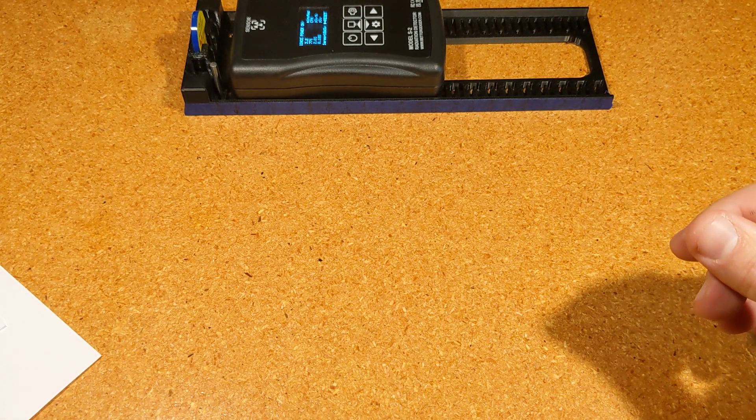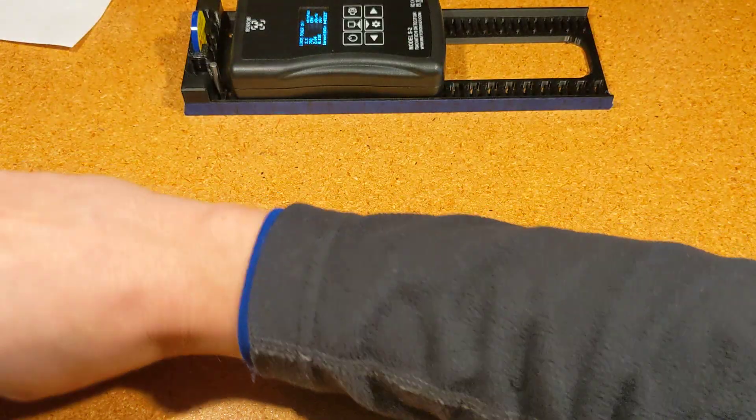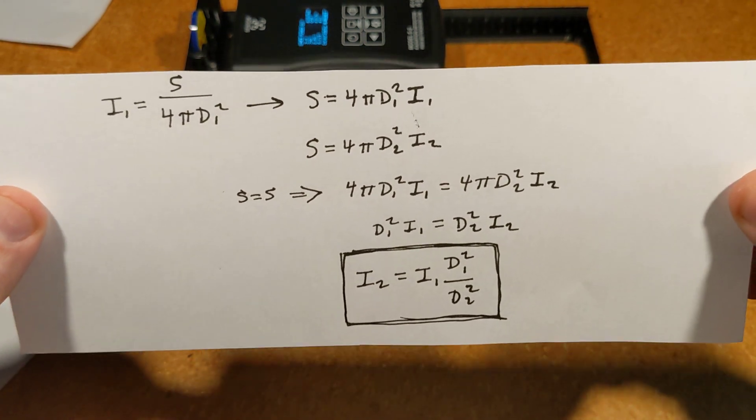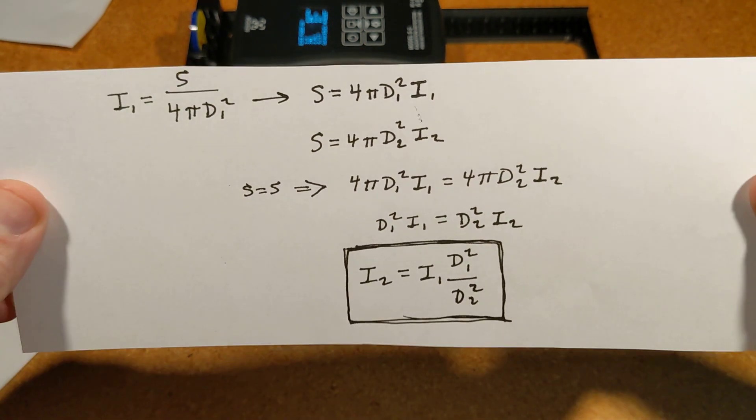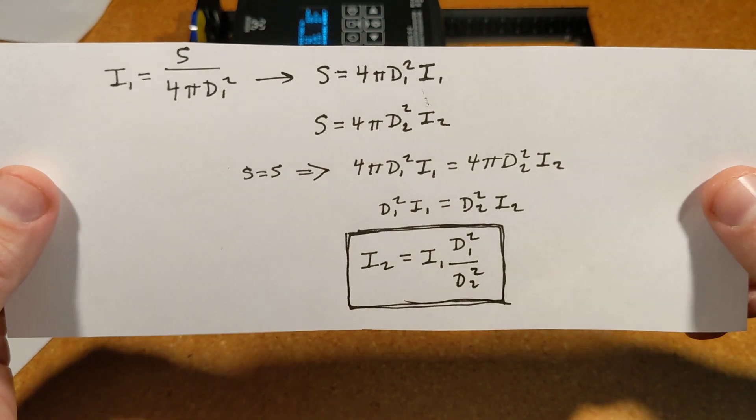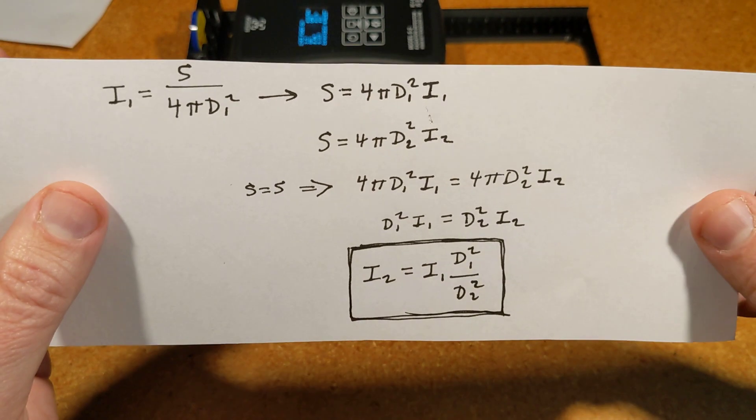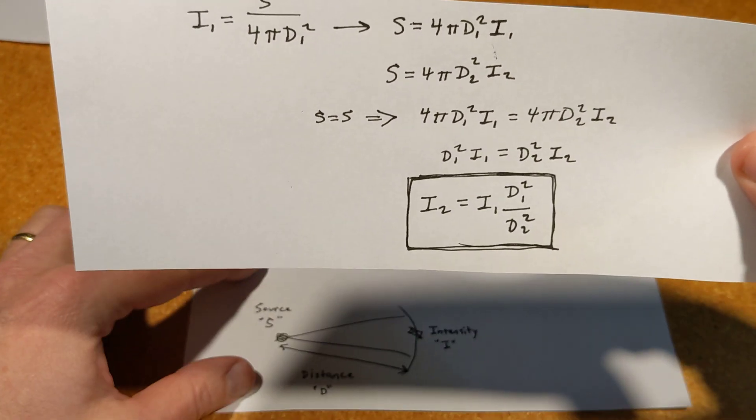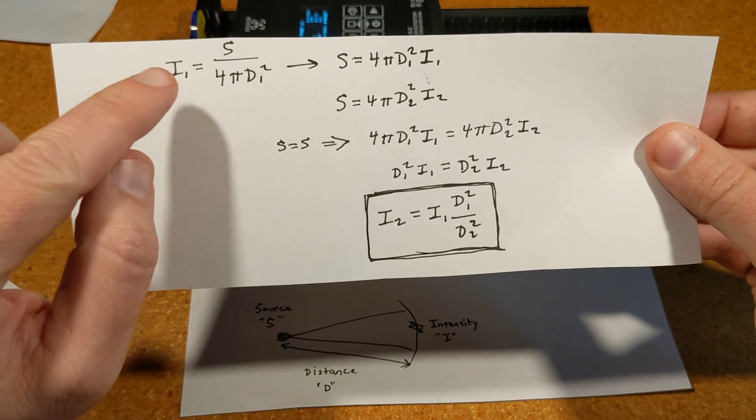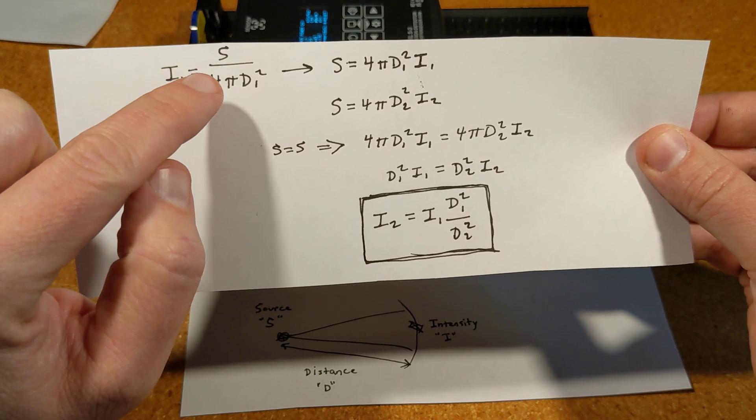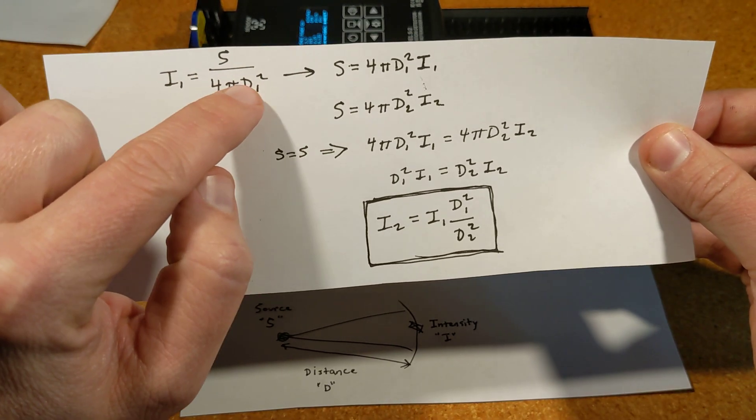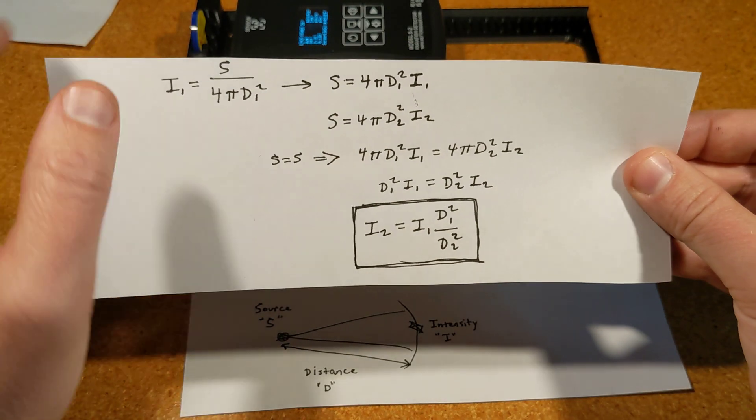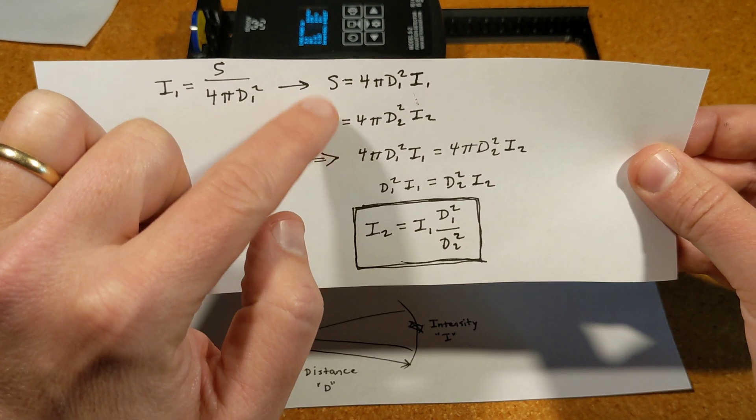To make that a little more concrete, here we have the derivation of some basic formulas. Don't worry if this is too much math - you can gloss over it. The intensity I is the source strength divided by the surface area of that sphere: 4π times the distance squared. If you have two situations where the source strength is the same, then you have distance one, intensity one, distance two, intensity two. These two things are equal.